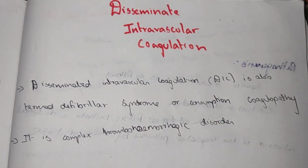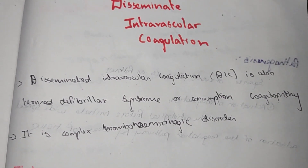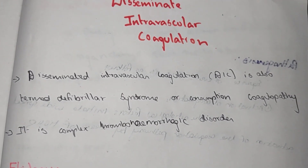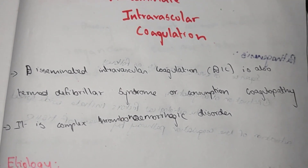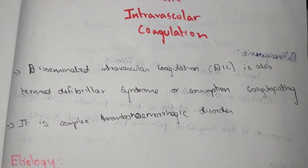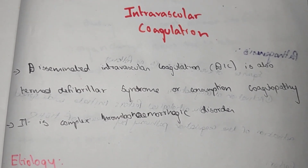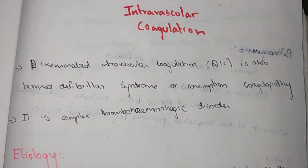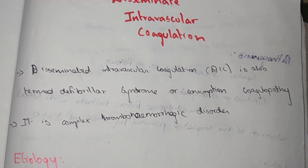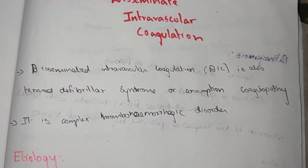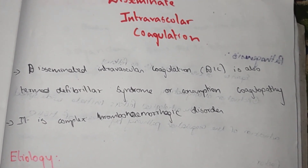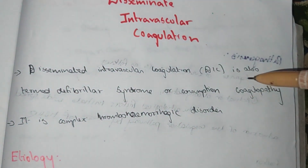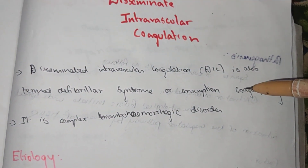Disseminated intravascular coagulation means the small blood vessels which are present get coagulated, and this causes coagulation as well as failure to supply blood to the nearby organs.